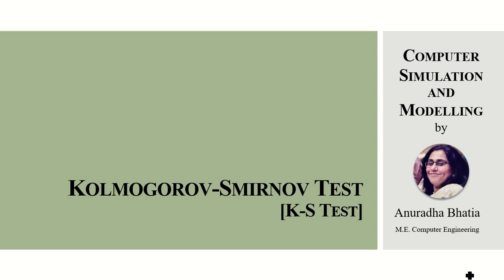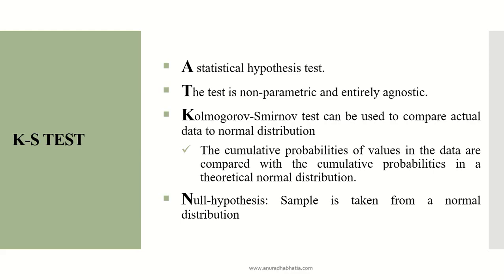Let's see the Kolmogorov-Smirnov test, commonly known as the KS test, for computer simulation and modeling. The KS test is a statistical hypothesis test. It is a non-parametric and entirely agnostic test. This test can be used to compare actual data to a normal distribution. The cumulative probabilities of values in the data are compared with the cumulative probabilities in a theoretical normal distribution.